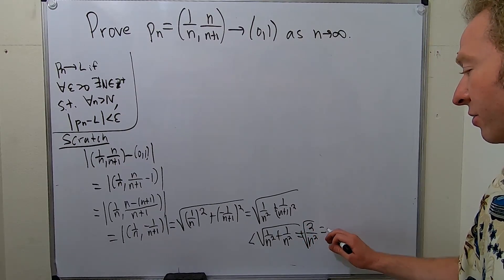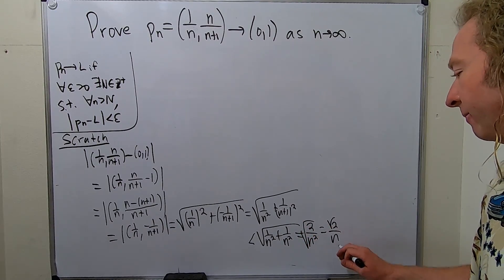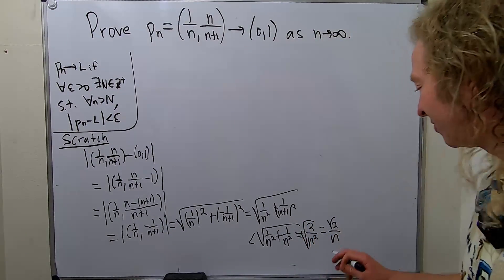And then you add these and you just get 2 over n squared. This is the square root of 2 over n. You want this to be less than epsilon.